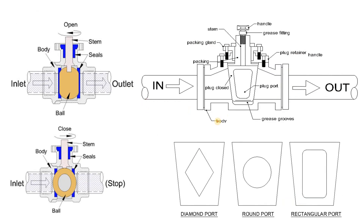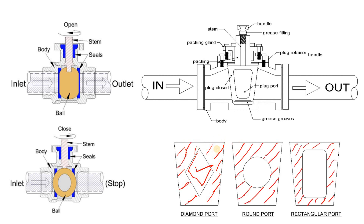In the plug valve, the ports are also of different types. This is the hollow section and this one is the solid section — this is the front view of the disc in the plug valve. The disc can be a diamond port, round port, or rectangular port. It depends on the accuracy and efficiency you want from the plug valve where you are installing it.